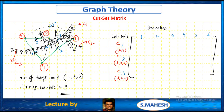C1, branch 1 — same direction, so 1. Branch 2 — no connection, 0. Branch 3 — no connection, 0. Branch 4 — opposite direction, so minus 1. Branch 5 — opposite direction, so minus 1. Branch 6 — same as cut set direction, so 1.